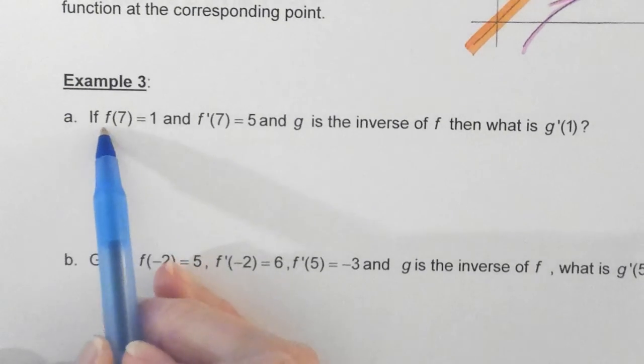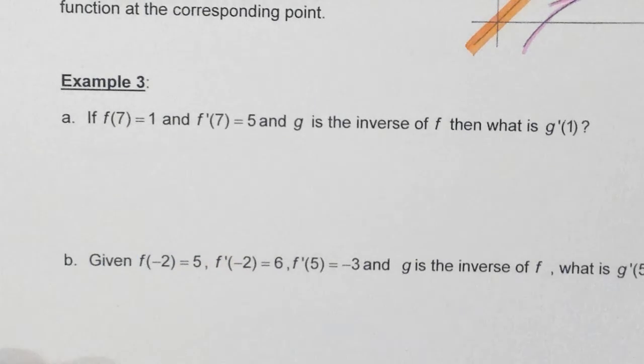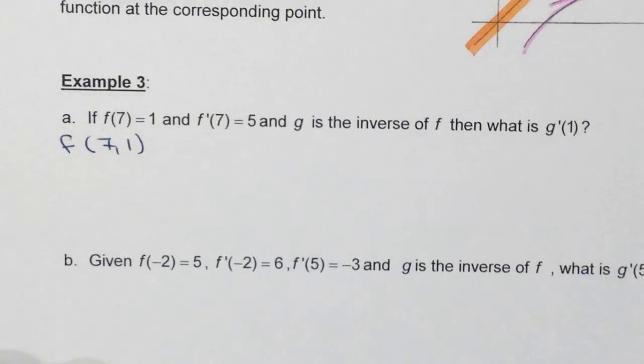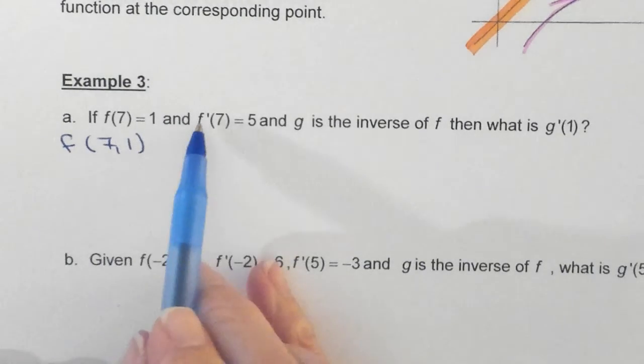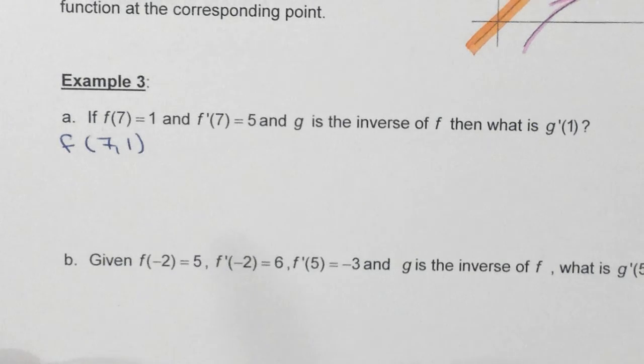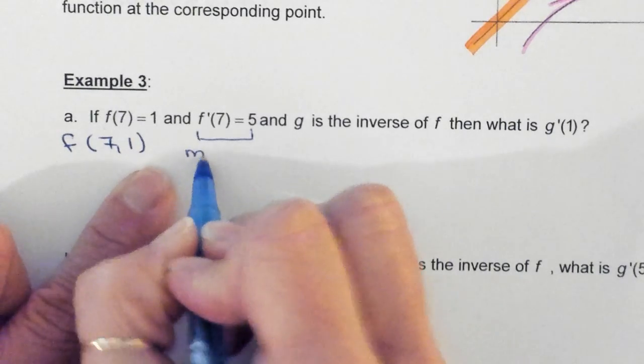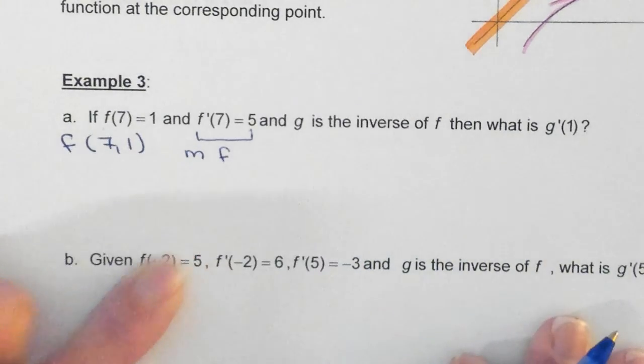You are given f of 7 is equal to 1. Can someone just tell me what that means? F of 7 is equal to 1? Exactly. On the f graph, whatever it is, I have the point (7, 1). I'm just rewriting it so that it looks familiar to me. What does f prime of 7 equal to 5 mean? The slope at 7, right, is equal to 5. So this is my slope of f.